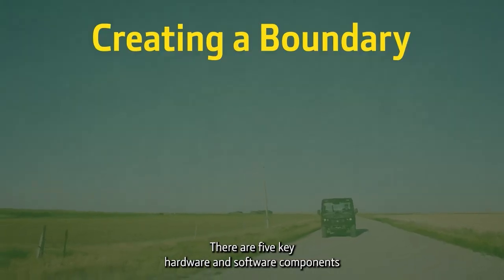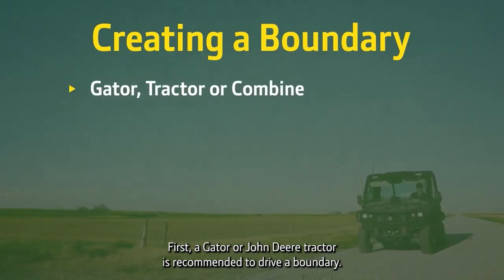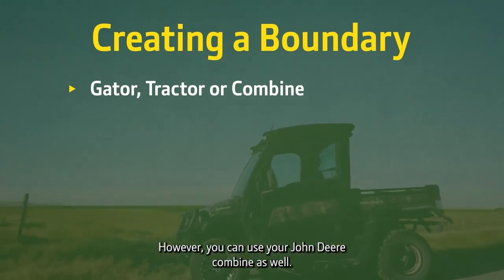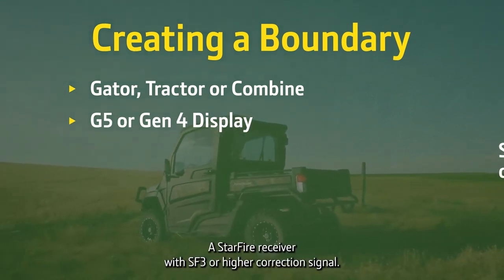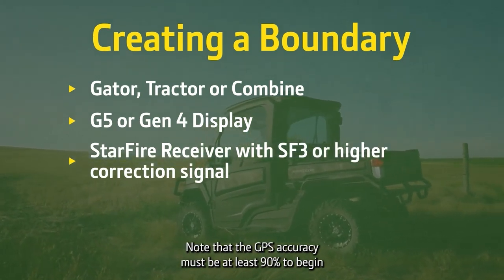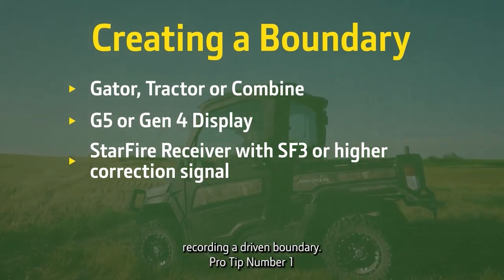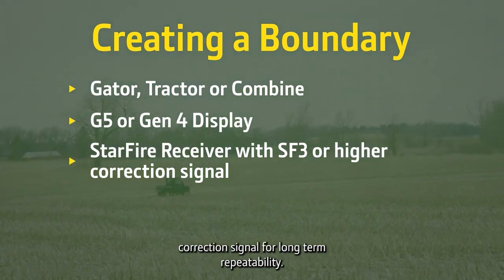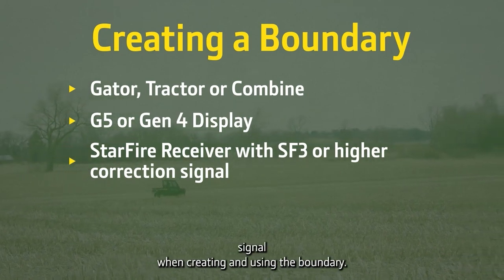There are five key hardware and software components that we both require and recommend to get started. First, a Gator or a John Deere tractor is recommended to drive a boundary. However, you can use your John Deere combine as well. You will also need a G5 or Gen 4 display with core automation software capabilities. GPS accuracy must be at least 90% to begin recording a driven boundary. Pro tip number one: we recommend recording your boundary with SFRTK correction signal for long-term repeatability. Pro tip number two: use the same correction signal when creating and using the boundary.